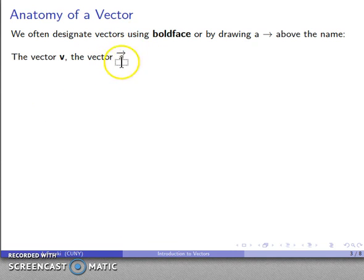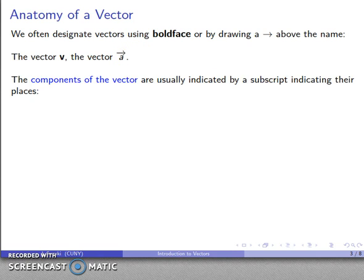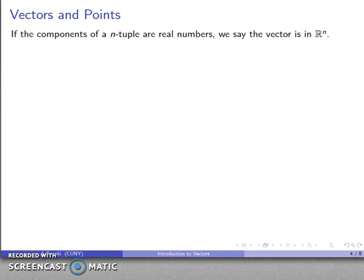The components of the vector are usually indicated by adding a subscript to indicate their places within the vector. So we might talk about the vector v, and that's going to be the components v1, v2, v3, and so on up to vn, where the subscript tells you this is the first component, second component, third component, and so on.